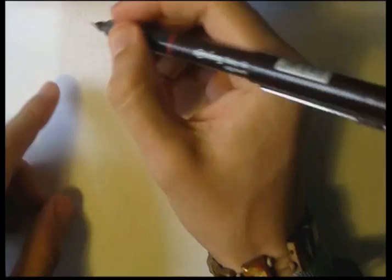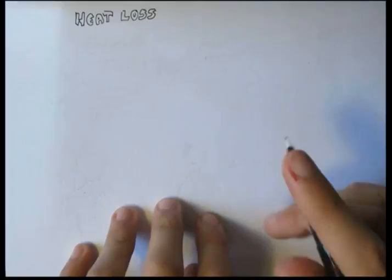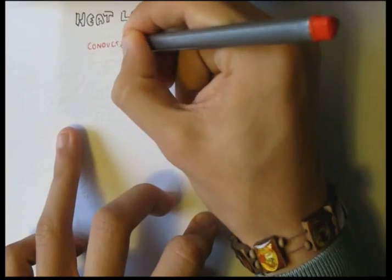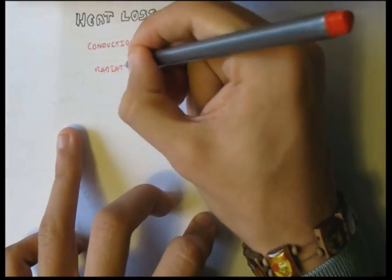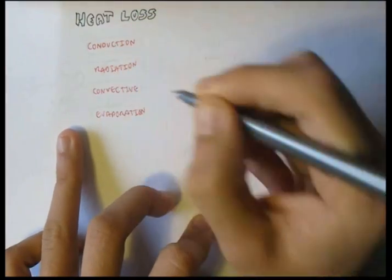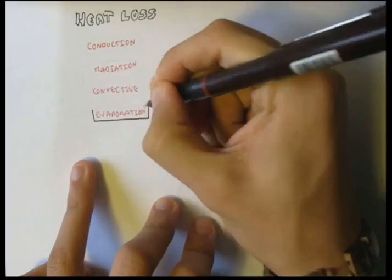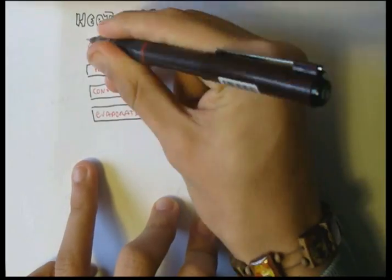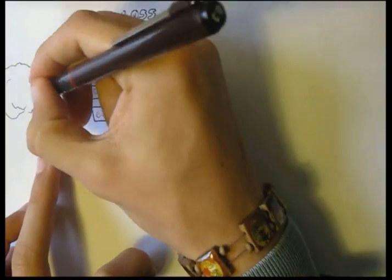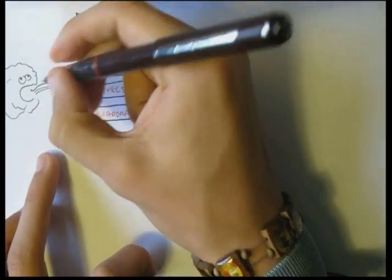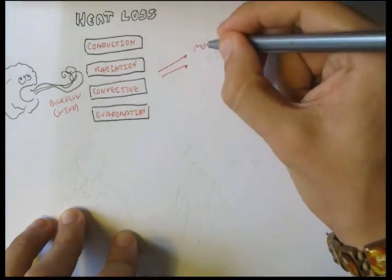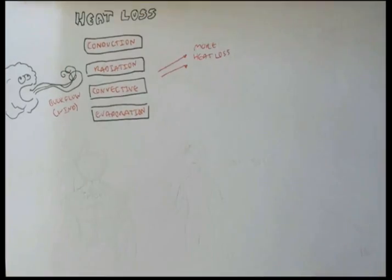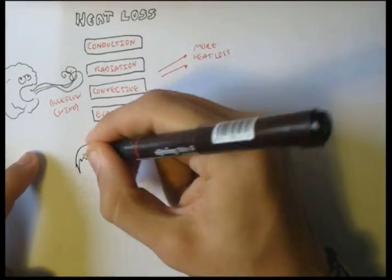So let's go over the four ways we lose heat again: conduction, radiation, convective process, and evaporation. All these four ways are enhanced by bulk flow, such as wind, so that there is more heat being emitted out of the body.